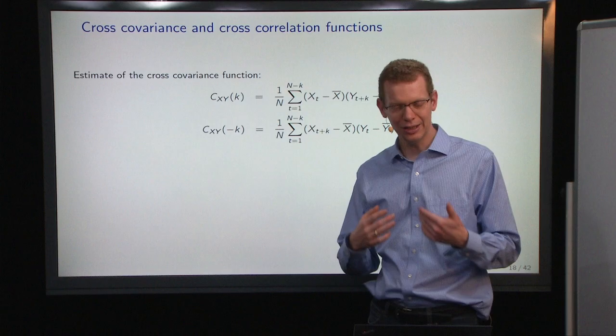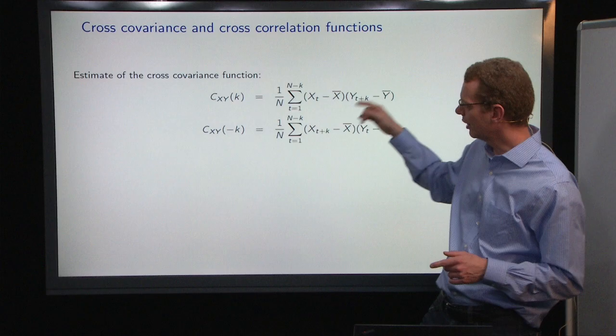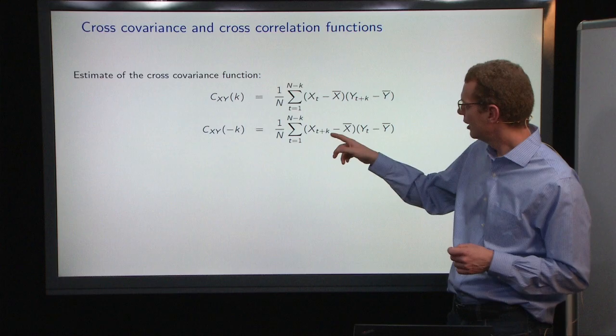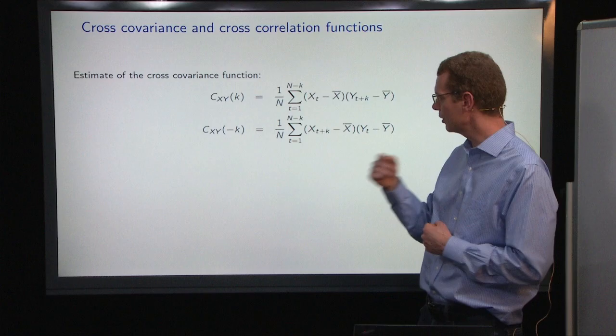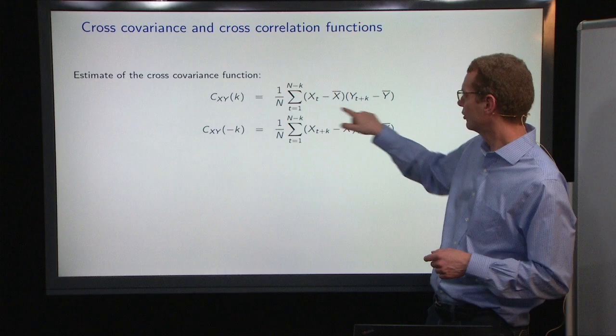And likewise for the autocorrelation, we divide by n instead of n minus k. The only difference is here that when you go backward in time, we can write that in many different ways. What we do is that instead of going k steps backward in time, we send x k steps forward in time. Then we can do the sum over the same element.